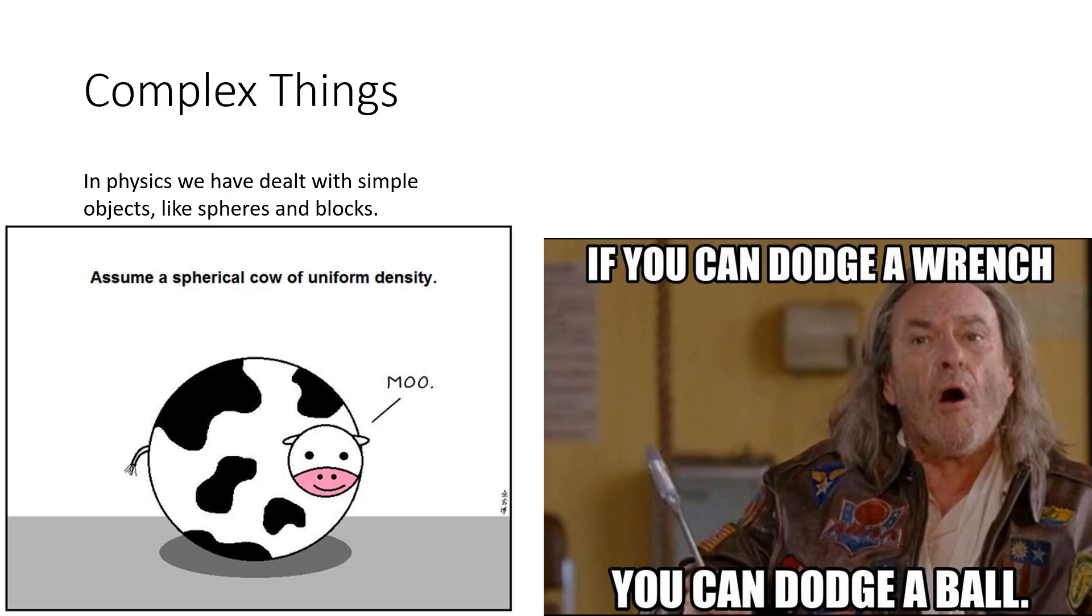But suppose we're trying to deal with something more complex, like comparing a wrench to a ball. In this video, what we're going to do is try to figure out how to take complicated things and reduce them down so they look like spherical cows that are a little bit easier to analyze.